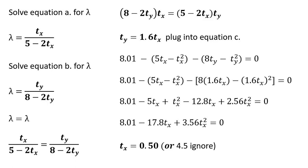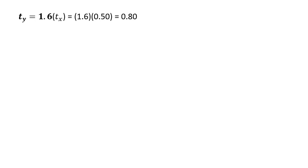The optimal tax in the market for good X is 50 cents per unit. Therefore, the optimal tax in the market for good Y is 1.6 times 0.5, or 80 cents per unit.